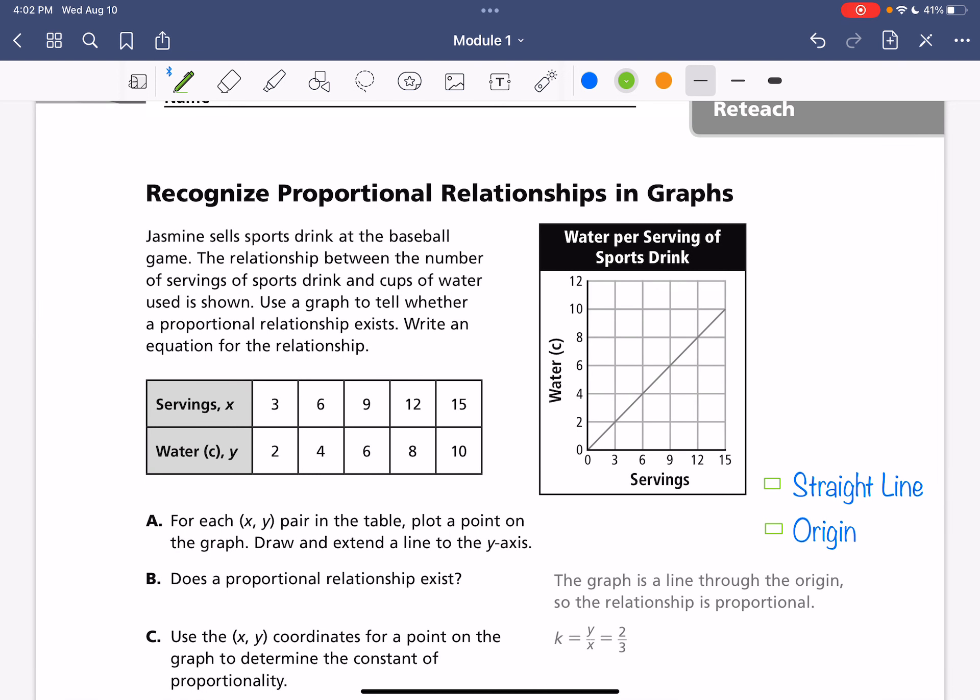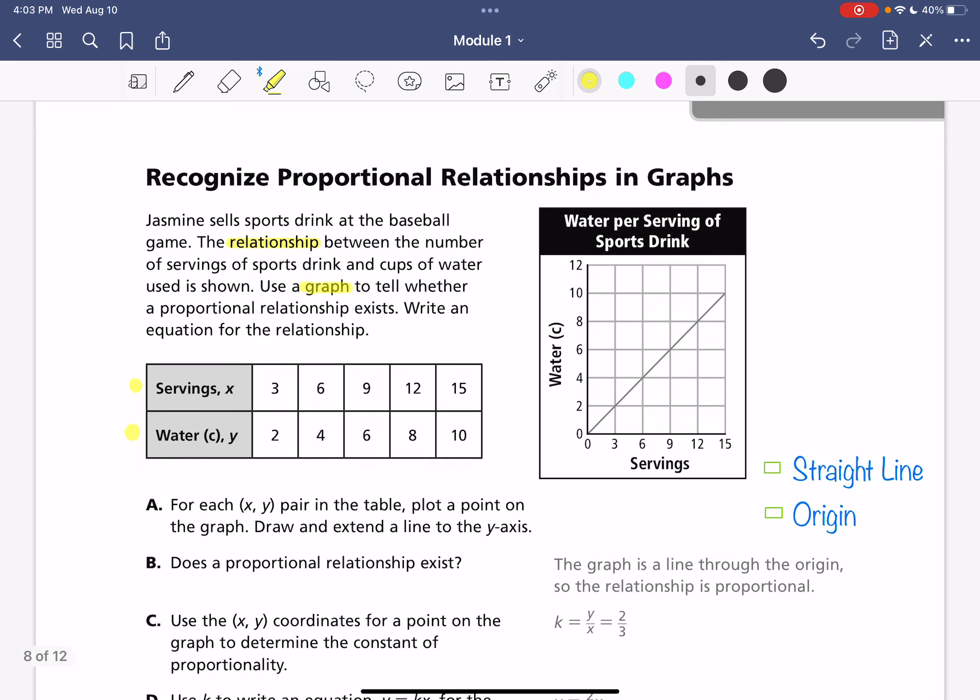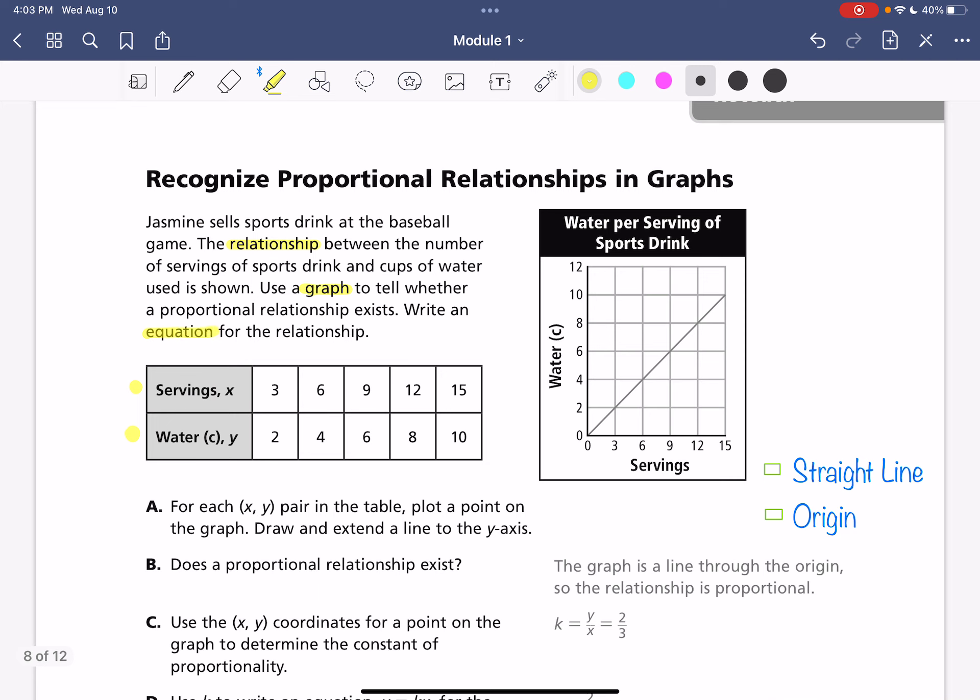So here we're recognizing whether something is proportional or not within a graph. Our first word problem says Jasmine sells sports drinks at a baseball game. The relationship between the number of servings of sports drinks and the cups of water used is shown. Use a graph to tell whether a proportional relationship exists and then write an equation for the relationship. So let's highlight what we have here. We have the relationship between servings versus the cups of water, and then we need to make a graph to tell whether it is proportional, and then we've got to write an equation.